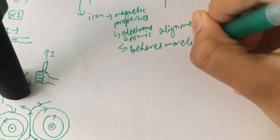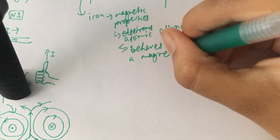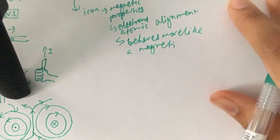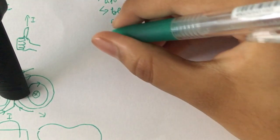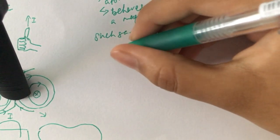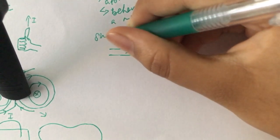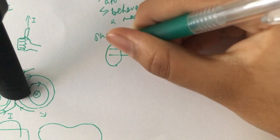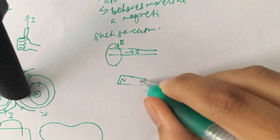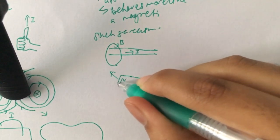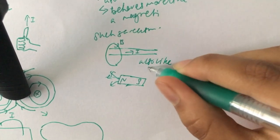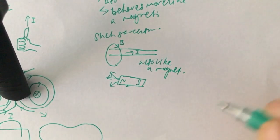The next learning outcome is to understand that a current-carrying conductor placed in a magnetic field might experience a force. If you know that a current-carrying conductor can make a magnetic field, then a magnetic field can also affect the current-carrying conductor, because the conductor is itself a magnet in a way. So technically it makes sense that it will experience a force. The equation for that force is: F = BIL sin θ.